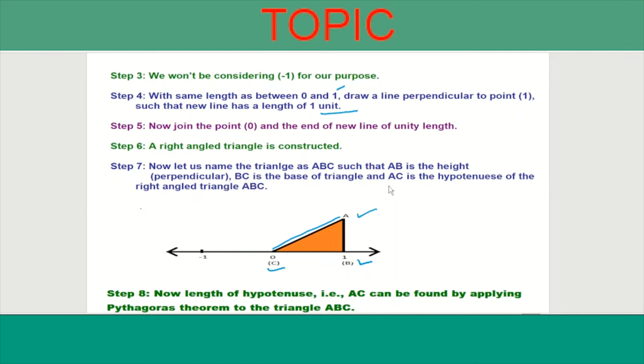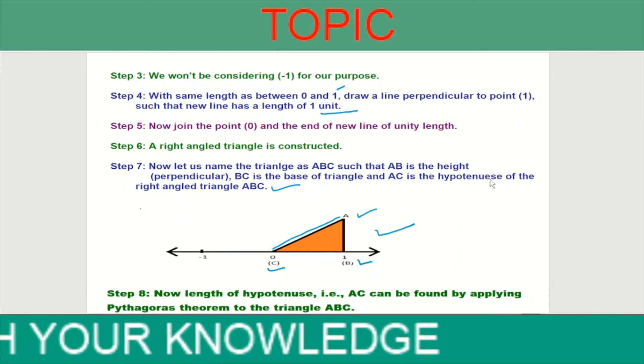BC is the base of the triangle and AC is the hypotenuse of the right angle triangle ABC.